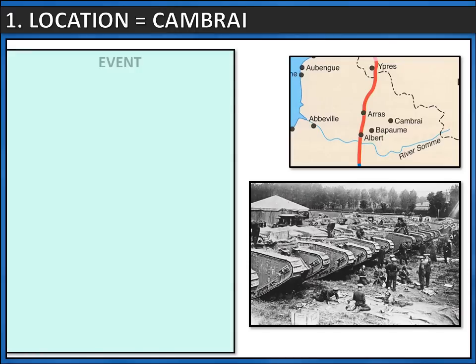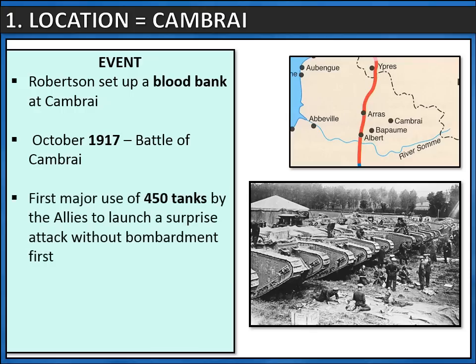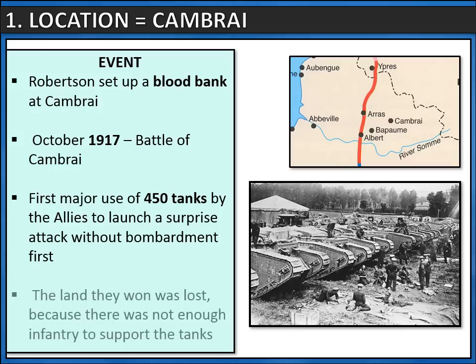Let's look at our last location, Cambrai. Now Cambrai is important for two reasons. The first is medical, and that's because Robertson set up a blood bank at Cambrai before the Battle of Cambrai in 1917. This meant there was going to be enough blood supplies for transfusions for injured soldiers. The other reason it's really important is because this is the first major use of tanks, and 450 tanks were used by the allies to launch a surprise attack on the Germans. At first this was really successful and it allowed the allies to gain quite a lot of land from the Germans. But unfortunately this land was then quickly lost because they didn't have enough soldiers and infantry to support the tanks.